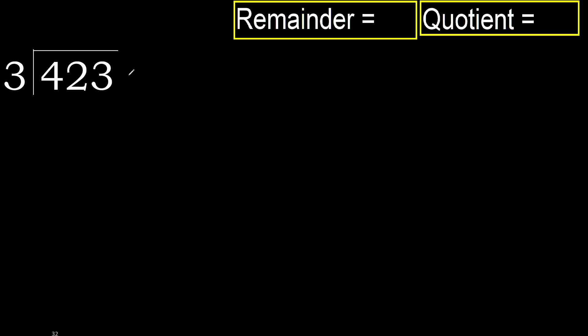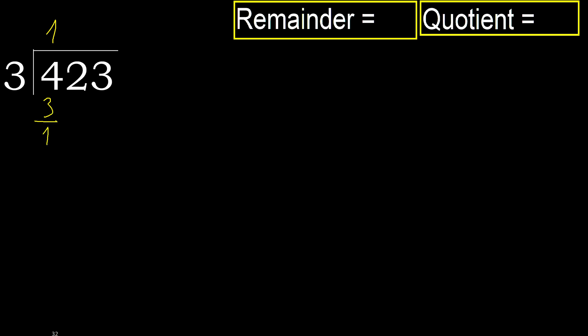423 divided by 3. 4 is not less, so with 4: 3 multiplied by which number is nearest to 4 but not greater? 3 multiplied by 2 is 6 — 6 is greater. Multiply by 1: 3 is not greater, ok. Subtract: 4 minus 3 is 1. Next, bring down 2, giving 12.